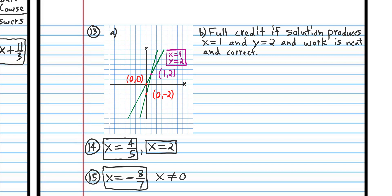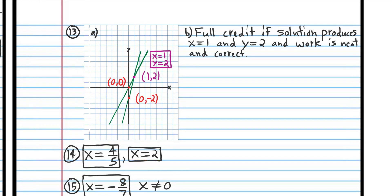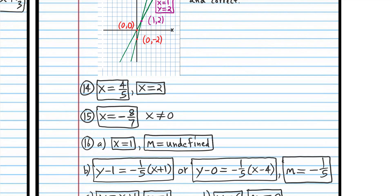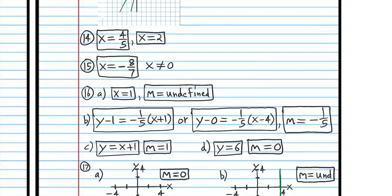Since you're using graphing paper, you don't really need to label the intervals — I'm just going to assume each box is one unit. Give yourself full credit, so a total of two points if you showed your work and it's nice and neat, and your answer produced x equals 1 and x equals 2. Subtract two points if you didn't get the answer for 14. Subtract one-fourth of the points if you didn't get one of the answers but got the other. Subtract one point for number 15 if you wrote x equals 0, because that's not a solution.